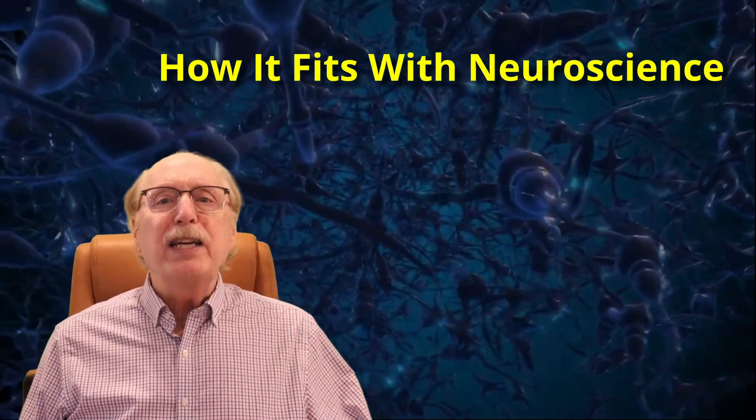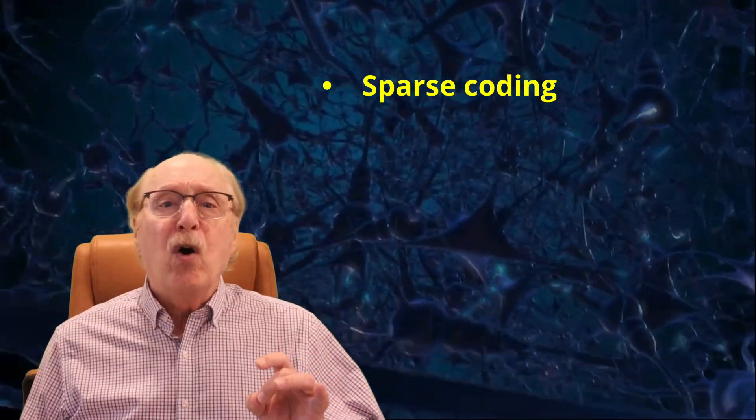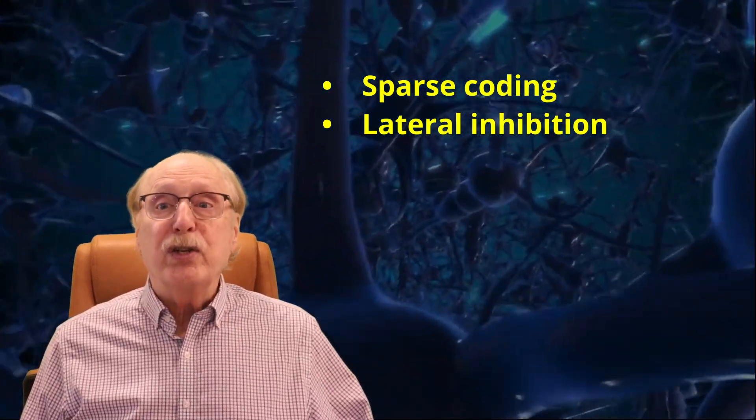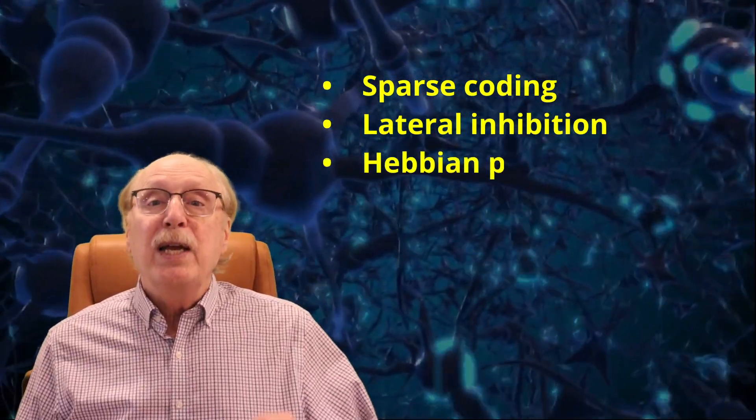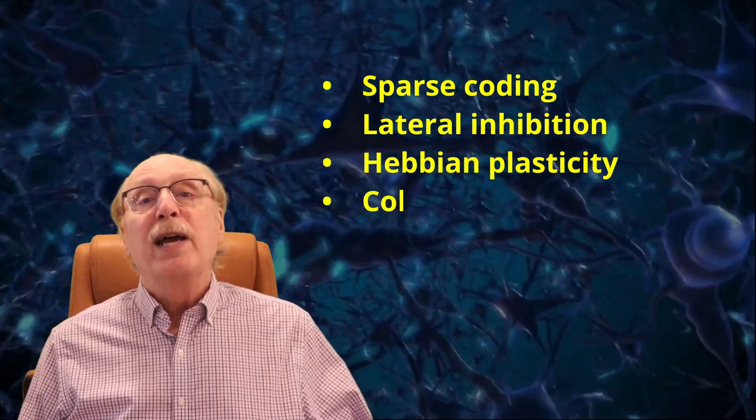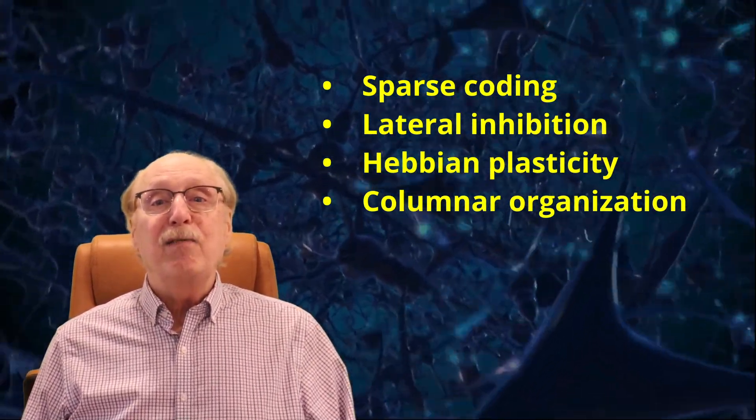This simulation reflects real neuroscience. It shows sparse coding where only one column out of many fires. It uses lateral inhibition, just like the olfactory bulb or the visual cortex. It's built on Hebbian plasticity, which has decades of experimental support, and it reflects the columnar organization which has been documented since the 1950s. And unlike many AI theories, this one doesn't wave its hands. It's a real testable spike-based circuit that you can simulate, measure, and evolve.